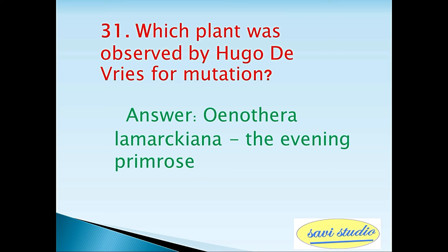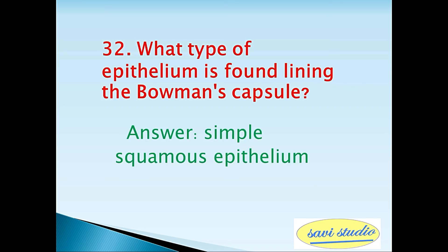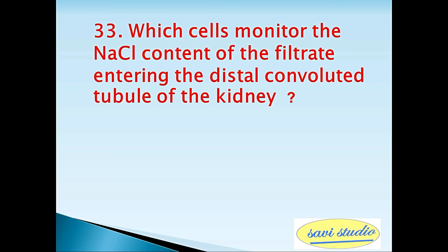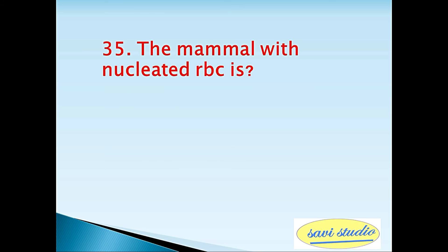Thirtieth question: What is the full form of CCK? Answer: cholecystokinin. Thirty-first question: Which plant was observed by Hugo de Vries for mutation? Answer: Oenothera lamarckiana, the evening primrose. Thirty-second question: What type of epithelium lines Bowman's capsule? Answer: simple squamous epithelium. Thirty-third question: Which cells monitor the NaCl content of the filtrate entering the distal convoluted tubule of the kidney? Answer: macula densa.